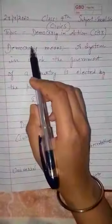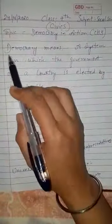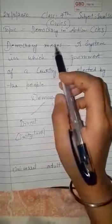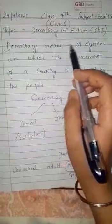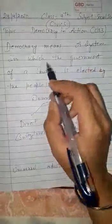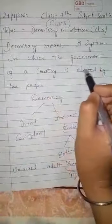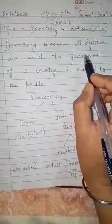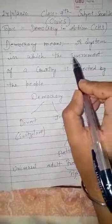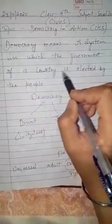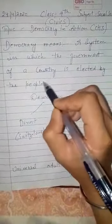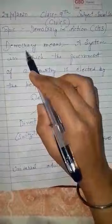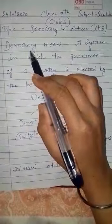First of all, I will tell you the meaning of democracy. Democracy means a system in which the government of a country is elected by the people.